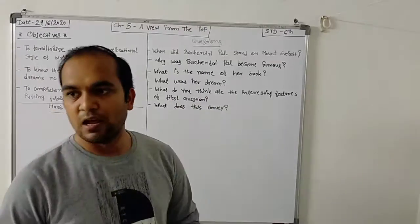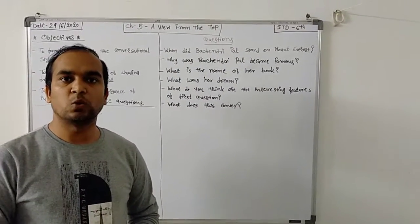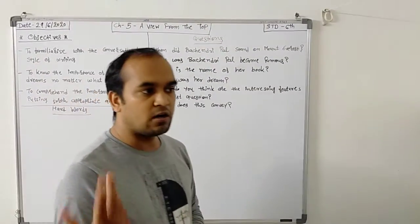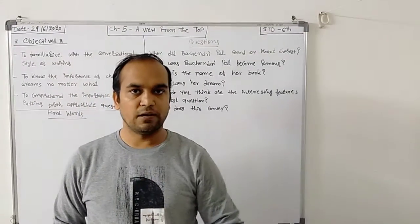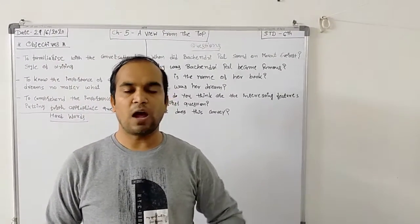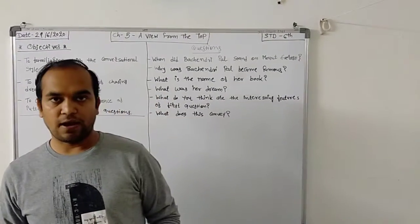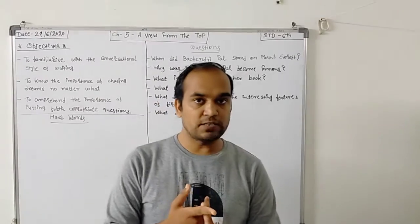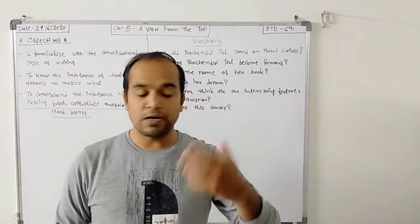Now students, the term 1 syllabus is going on. Our term 1 syllabus is chapter 4 to chapter 7. Chapter 4 I had already taught you. Now this is chapter 5. Chapter 4 to chapter 7 and one poem. This is your term 1 syllabus.